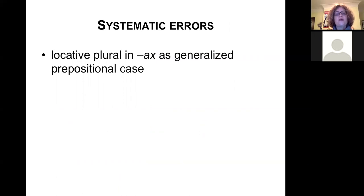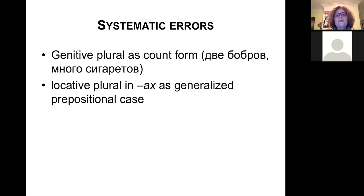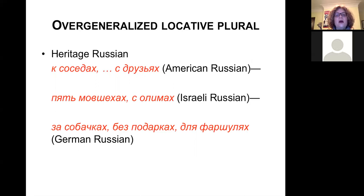I'm going to show you one example: the locative plural in -ах, which seems to emerge as a generalized prepositional case in heritage Russian, and another example — neuter-to-feminine reanalysis. Russian has a very complicated case system, and what we find is that heritage speakers use many errors, but again, very systematically. For instance, when they count, they don't know how to use the special form with the numerals two, three, and four — so they just say два бобров, много сигарет.